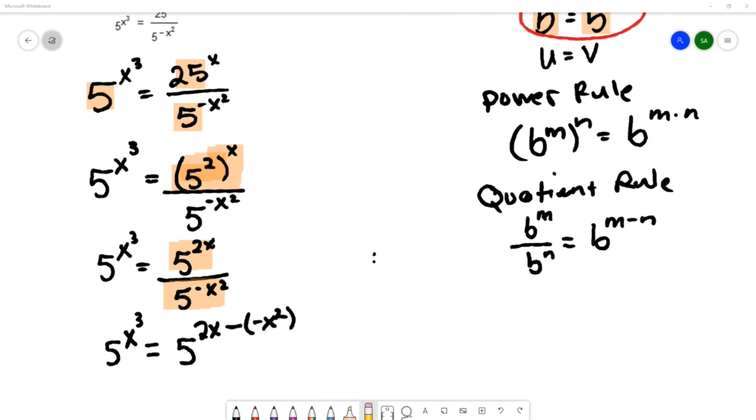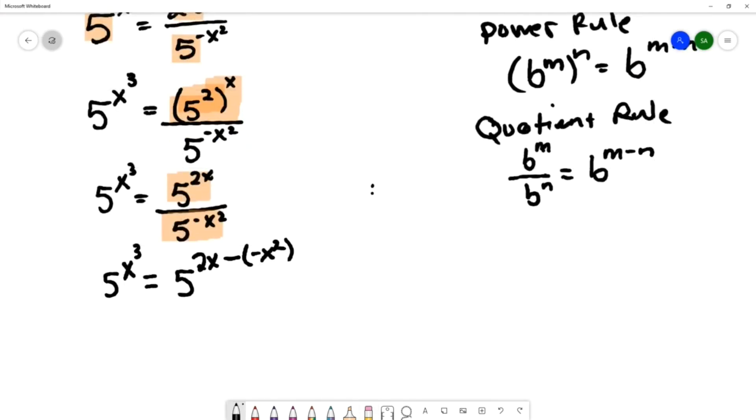So let's simplify that subtraction in the exponent. We would have 5 to the 2x plus x squared on the right-hand side.